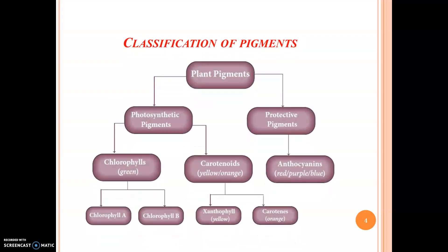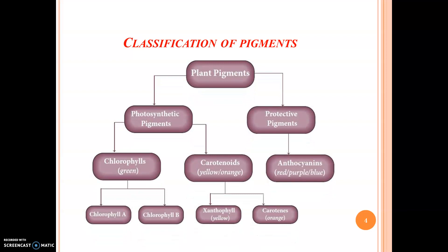Classification of Pigments: plant pigments are classified into photosynthetic pigments and protective pigments. Photosynthetic pigments are divided into chlorophylls, which are green in color, and carotenoids, which are yellow or orange. Chlorophylls include chlorophyll A and chlorophyll B. Carotenoids include xanthophylls, which are yellow in color, and carotenes, which are orange in color. Protective pigments include anthocyanins, which are red, purple, black, or blue.